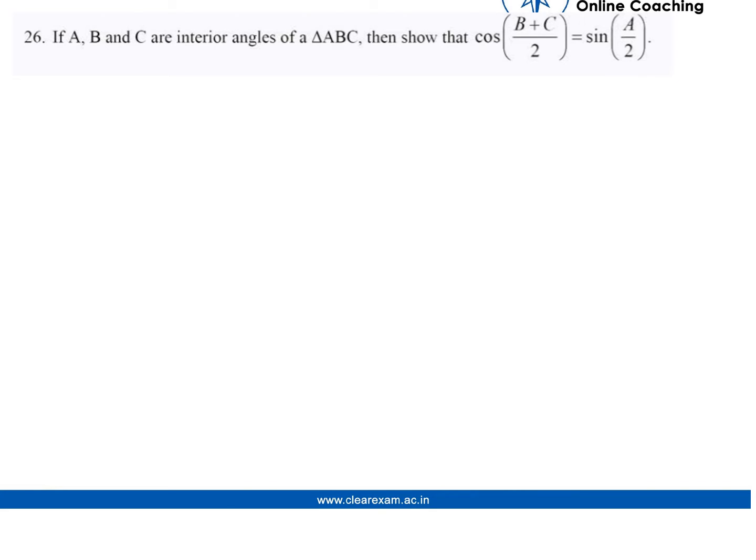Hey guys, in this question we need to prove that cos of (B+C)/2 equals sin(A/2), if A, B, and C are interior angles of triangle ABC. This is the triangle ABC. These are the interior angles of this triangle. So let's see the answer to this question.